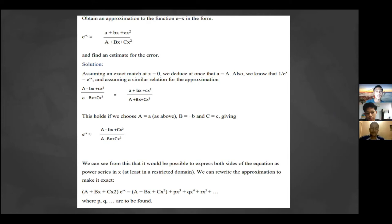For the solution, first we are assuming an exact match at x = 0. We deduce at once that a = A. Also, we know that 1/e^x = e^(-x), and assuming a similar relation for the approximation.